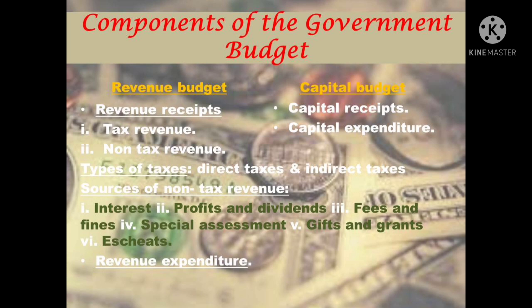Revenue receipts are receipts that neither create any liabilities nor cause reduction in assets of the government. Under revenue receipts, there are tax revenue and non-tax revenue. Tax revenue refers to receipts from all kinds of taxes such as income tax, corporate tax, excise duty, etc. A tax is a legally compulsory payment imposed by the government on income and profit of persons and companies without reference to any benefit. Non-tax revenue refers to government revenue from all sources other than taxes — income which the government gets through sale of goods and services rendered by different government departments. There are two types of taxes: direct taxes and indirect taxes. When liability to pay a tax and the burden of that tax falls on the same person, it is termed a direct tax. When liability to pay a tax is on one person and the burden of that tax falls on another person, it is termed an indirect tax.